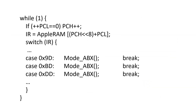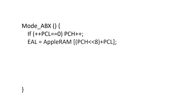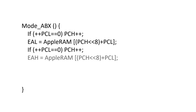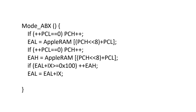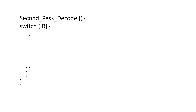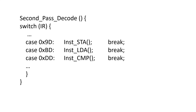In our C model, we add these opcodes as cases within our decoder, and all of them call the absolute X routine. The first part of absolute and absolute X is the same: increment the PC, load a value from memory into EAL, increment the PC again, then load another value from memory into EAH. But now we add the value of the index X variable. Rather than doing a 16-bit add, I check whether the sum of IX and EAL is greater than 255 — if it is, I increment the EAH variable. Then I add index X to EAL, store the result in EAL without worrying about carry, and go to second pass decode. In second pass decode, the opcodes for these instructions become case statements, same as absolute mode but with different opcodes.